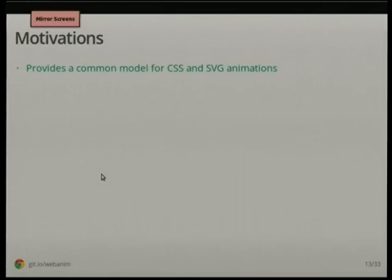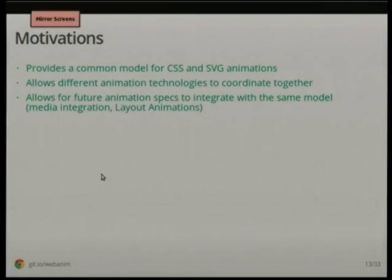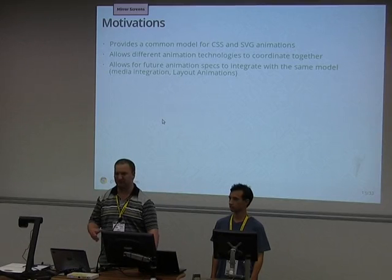What are we hoping to achieve? We'd like a common model for CSS and SVG animations — a common vocabulary to describe them. We'd like the different animation technologies working together, which is a huge step forward from today. Future animation specs for specific technologies should also be able to integrate with this. We should be able to have animations synchronised with videos and speech, starting and stopping. And we'd like to help retire Flash — HTML animation should be a compelling alternative.